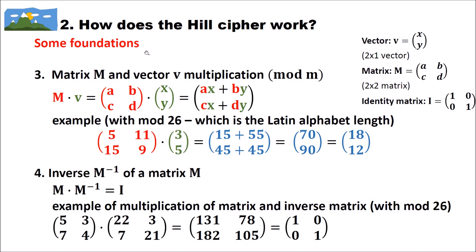So how does matrix M and vector multiplication work? You write the multiplication symbol between the matrix and the vector. Then using the equations, you multiply A and X, add B times Y to get the first element, then multiply C with X and D with Y and add those for the second element. As an example with mod 26: matrix (5, 11, 15, 9) multiplied by vector (3, 5). For the first element: A=5, X=3 gives 15, and B=11, Y=5 gives 55.